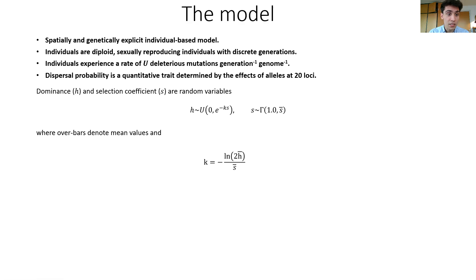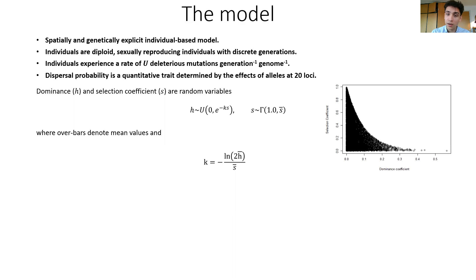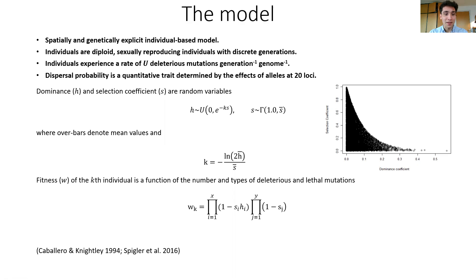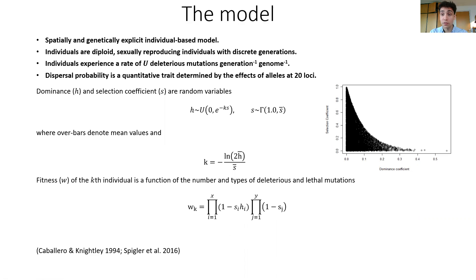These deleterious mutations are obtained by sampling dominance and selection coefficients from different probability distributions in order to get a realistic distribution of fitness effects of the mutations we introduce into these populations. These mutations allow us to define a fitness function where the fitness W of some individual is actually just the product of all the effects of the mutations — so in this model fitness effects are multiplicative, which has been shown to be a reliable way of estimating mutational effects when you have a large number of mutations, as we do in this model.